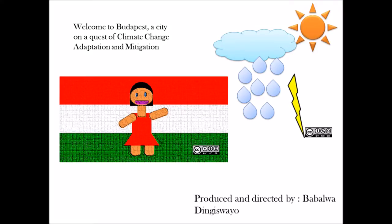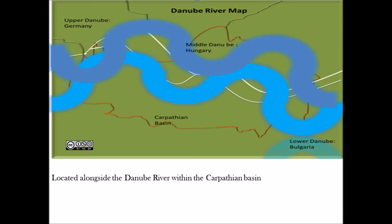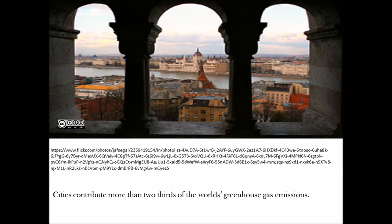Welcome to Budapest, a city on a quest of climate change adaptation and mitigation. Budapest is the CBD of Hungary which is located alongside the Danube River in the Carpathian Basin. Currently about 20% of Hungarian population lives in Budapest and 40% of Hungarian GDP is generated in Budapest.